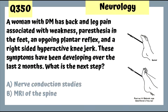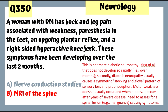Question 350: A woman with diabetes has back and leg pain, paresthesias in the foot, up-going plantar reflex, and right-sided hyperactive knee jerk developing over two months. Next step is MRI of the spine — this is not merely diabetic neuropathy. Diabetic neuropathy doesn't develop rapidly and usually causes symmetric stocking-and-glove sensory loss, so it's likely a malignancy or something else affecting the spine.